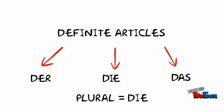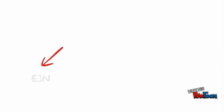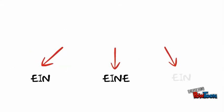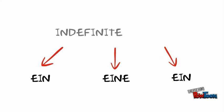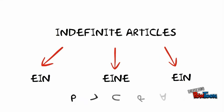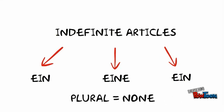The definite articles have a plural which looks like the feminine: Die. And there are indefinite articles: Ein, Eine, Ein. They don't have a plural form.